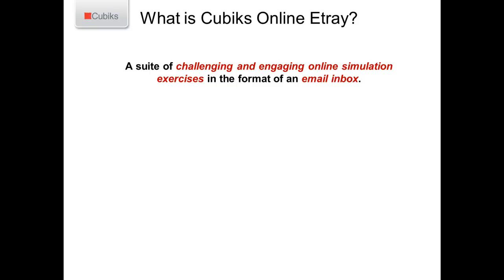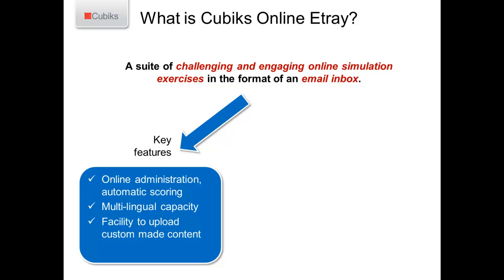So what is Qubix E-TRAY? E-TRAY isn't just one exercise — it is a suite of different exercises that we have available. What we present is an email inbox which candidates have to respond to. Key features are that it's administered online, giving you automatic scoring which removes all of the historic pain that people often used to feel with in-tray exercises — no painstaking going through everything manually. It's much more objective because there's a guaranteed pre-organised ordering in terms of how scoring works. It also has multilingual capacity, so we can provide E-TRAYs in a variety of languages. There's also the facility to use our pre-existing platform with your own custom-made content uploaded to it.